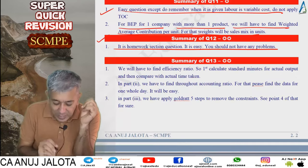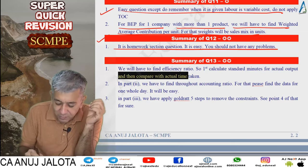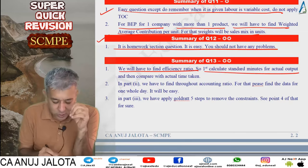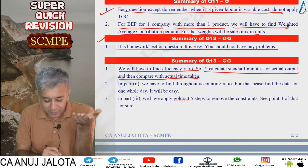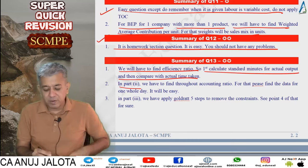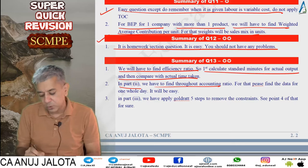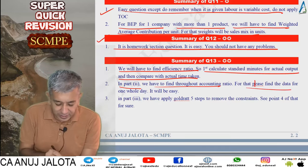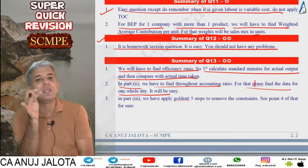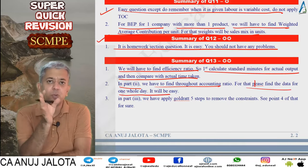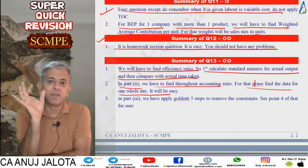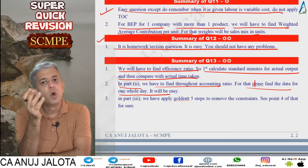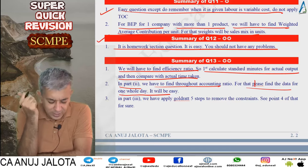For part 1, find efficiency ratio: calculate standard minutes for actual output then compare with actual time taken. For part 2, find throughput accounting ratio — do all calculations for one full day to make it easier. Contribution per day divided by factory cost per day gives the throughput accounting ratio or throughput performance ratio. An answer for the best production option was found accordingly.